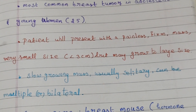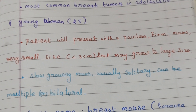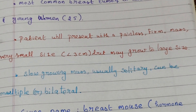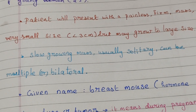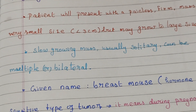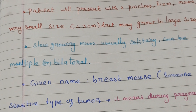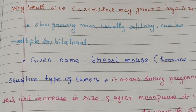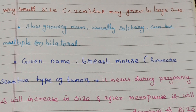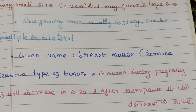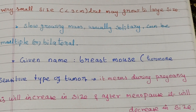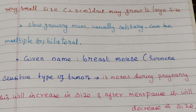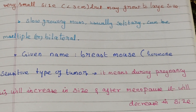It is a very painless, mobile, slow-growing mass which can be solitary, multiple, or even bilateral. It is given the name 'breast mouse' because of how mobile it is. Fibroadenoma is a hormone-sensitive type of tumor, meaning during pregnancy it will increase in size, and after menopause it will decrease in size.